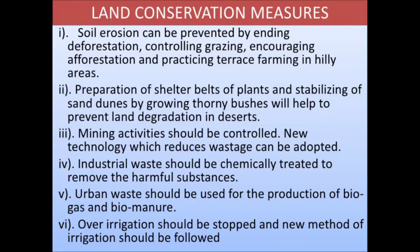Land conservation measures: we should plant more trees through afforestation and stop deforestation. Establishing shelter belts of plants and stabilizing sand dunes by growing thorny bushes helps prevent land degradation in deserts. Mining activity should be controlled and new technology adopted to reduce waste. Industrial waste should be chemically treated — for example, neutralizing acidic material with a base. Urban waste should be used for production of biogas and biomanure. Over-irrigation should be stopped and new irrigation methods adopted.